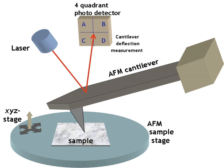When performing BEEM, electrons are injected from an STM tip into a grounded metal base of a Schottky diode. A small fraction of these electrons will travel ballistically through the metal to the metal-semiconductor interface, where they will encounter a Schottky barrier. Those electrons with sufficient energy to surmount the Schottky barrier will be detected as the BEEM current.